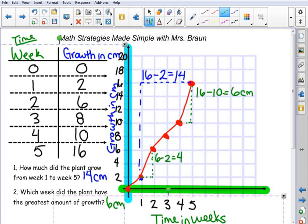So 6 centimeters in week... let's see, coming down, it was week 4 to 5.